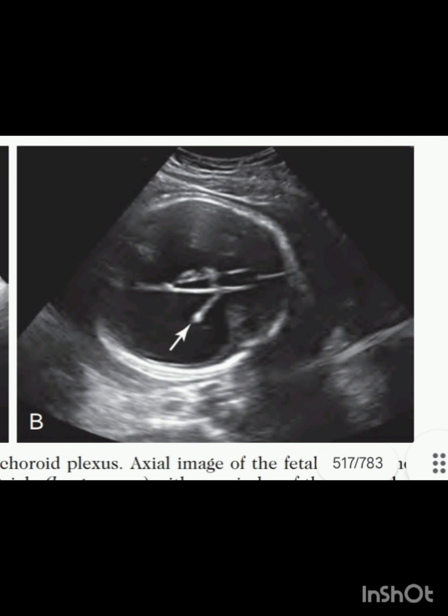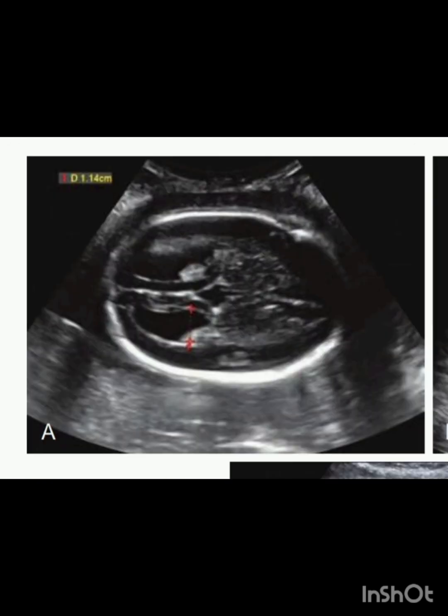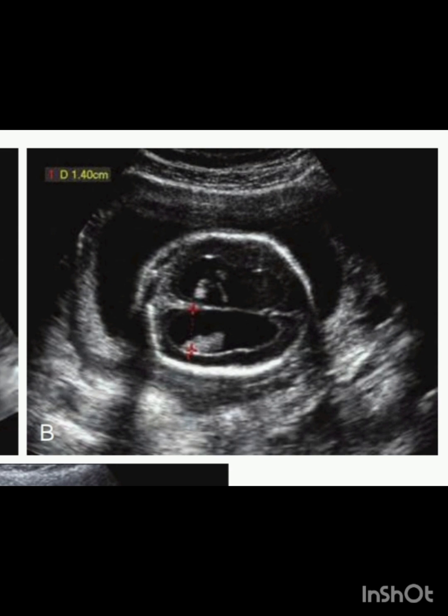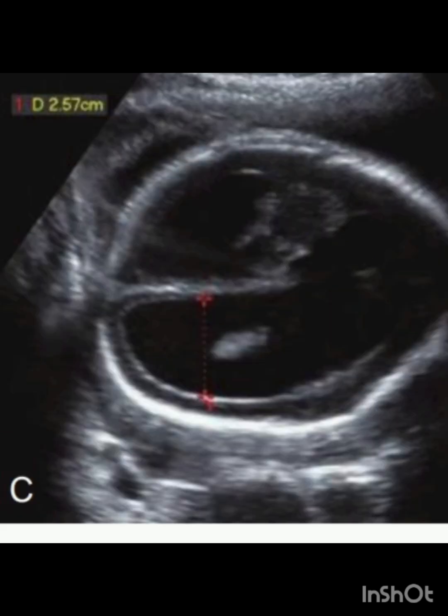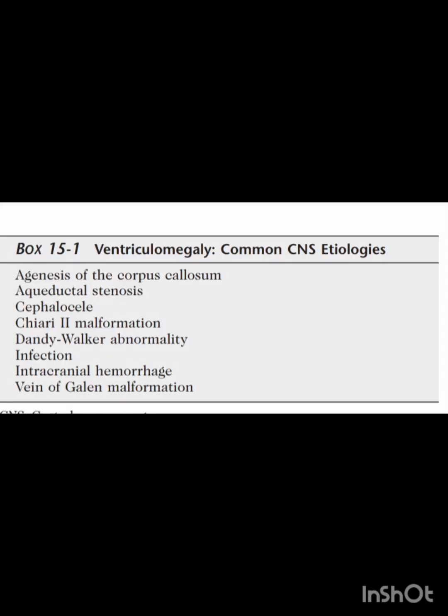Now I'll talk about ventriculomegaly and its severity. In this image you can see that the atrial width of the ventricle is 1.14 centimeters, so this is mild ventriculomegaly. In this next image the atrial width is 1.4 centimeters, so this is moderate ventriculomegaly. In this image the atrial width is 2.57 centimeters, so this is severe ventriculomegaly.